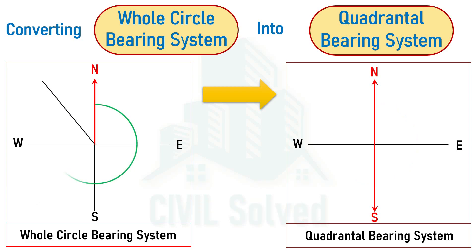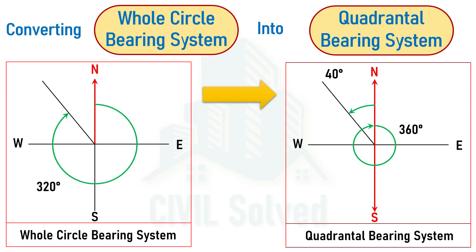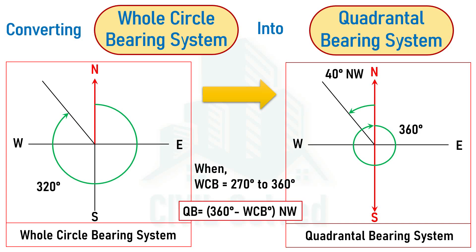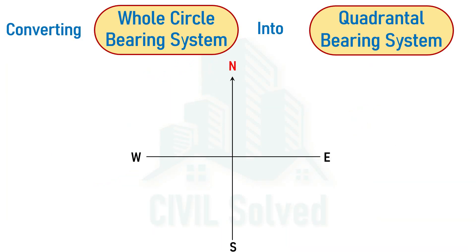If a line has a bearing of 320° in WCB, we can see that this line is near to north, so the angle is measured from north. Since the complete angle is 360°, subtracting 320° from 360° gives a remaining angle of 40°. The line lies in the northwest quadrant, so NW is written. The generalized formula for WCB from 270° to 360° is: QB = 360° − WCB, written with NW.